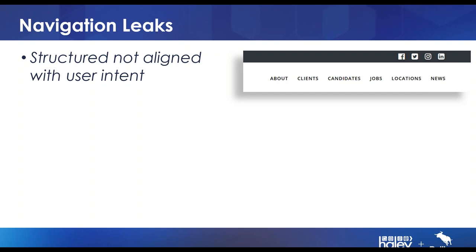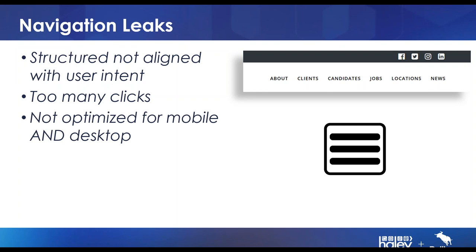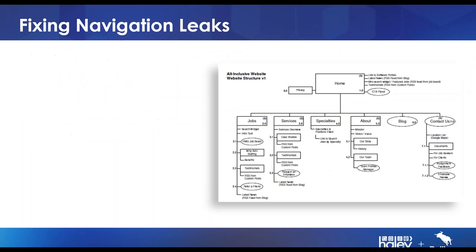Why not use words that fit user intent — 'employers,' 'job seekers,' 'find work,' 'find talent,' 'looking for a job,' 'looking to hire'? Use navigation wording aligned with what your users actually mean. There are also too many clicks — ideally users can get where they're looking in one click. And my personal pet peeve: sites optimized for mobile but not desktop, putting the hamburger menu as the navigation on desktop. The hamburger menu makes total sense on mobile, but on desktop it makes people take an extra click just to find your navigation — that's poor design.